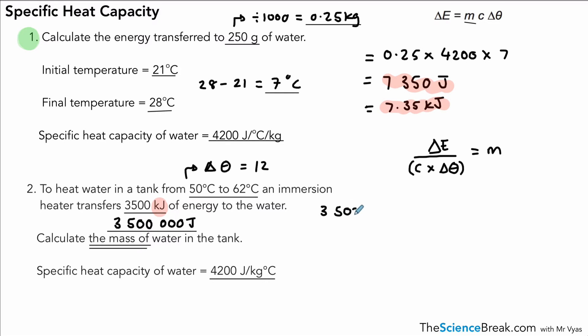So there's our energy transferred—3.5 million—is equal to mass times 4200 times our 12 degrees. So if we work out 4200 times 12, we can simplify that slightly. So we have the energy transferred is mass times 50,400, and that's slightly easier—very slightly easier—to rearrange.